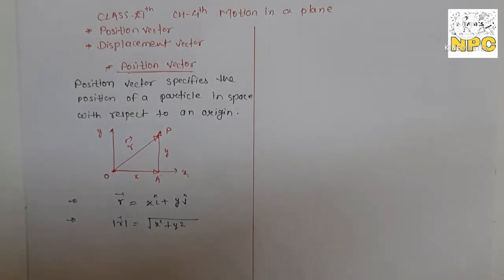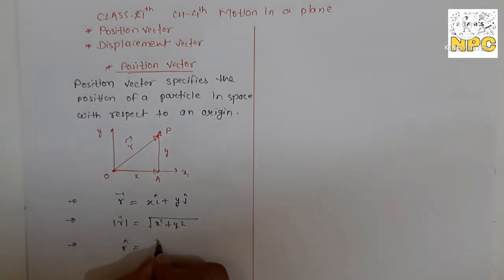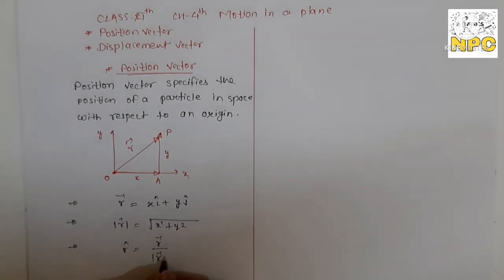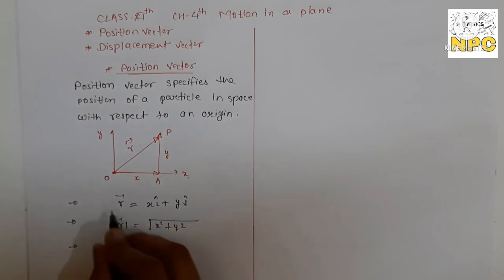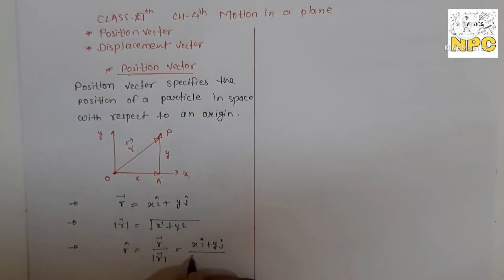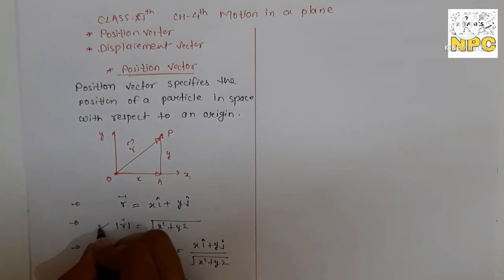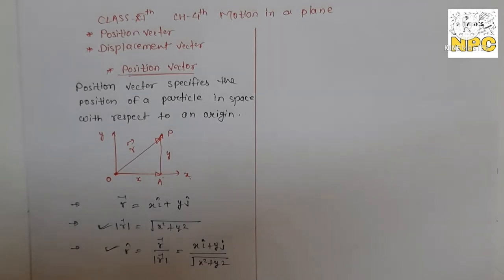Now we define the direction. The unit vector always gives the direction. So here, r-hat equals r vector divided by the magnitude of r. That is: r-hat = (x·i-hat + y·j-hat) / √(x² + y²). This gives you the direction, and the magnitude gives you the magnitude. So the r vector captures both magnitude and direction. This completes the position vector.